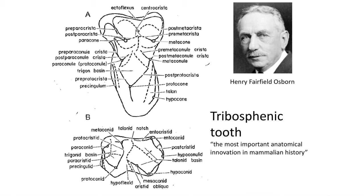Welcome to Utah State University's Vertebrate Paleontology Course. My name is Benjamin Berger, and in this lecture I will introduce you to the anatomical terms used to describe the tribosphenic molars, which are found in marsupials and placental mammals. By learning these key anatomical terms, you will be able to read and comprehend the scientific literature on fossil mammals. The terminology was developed by Henry Fairfield Osborne, who is best known today for his naming and describing of Tyrannosaurus rex.